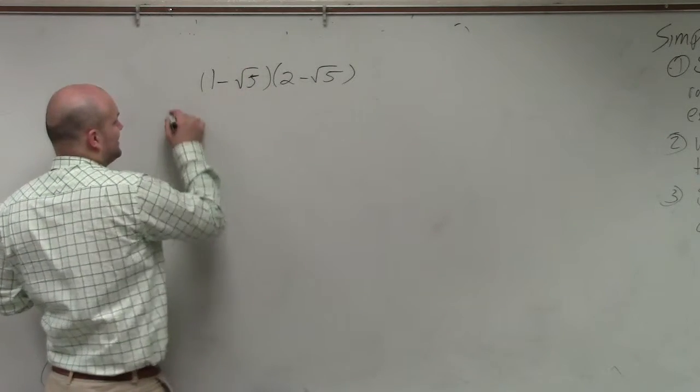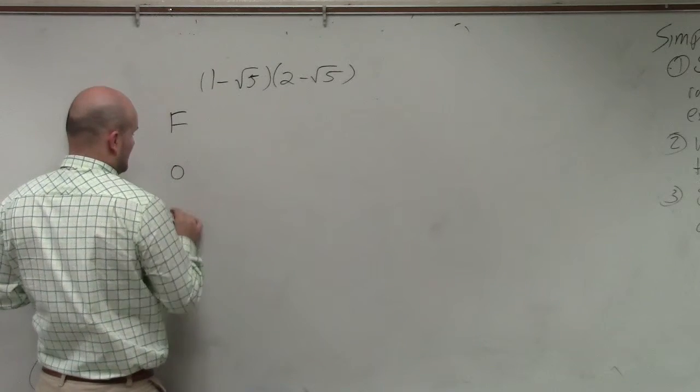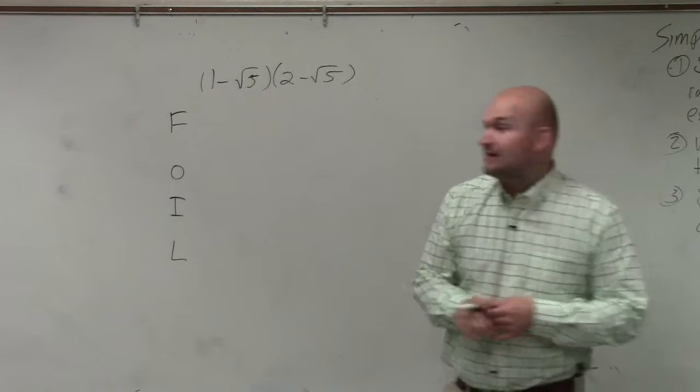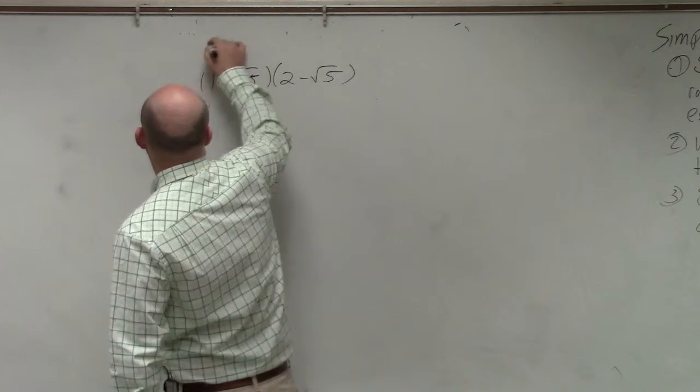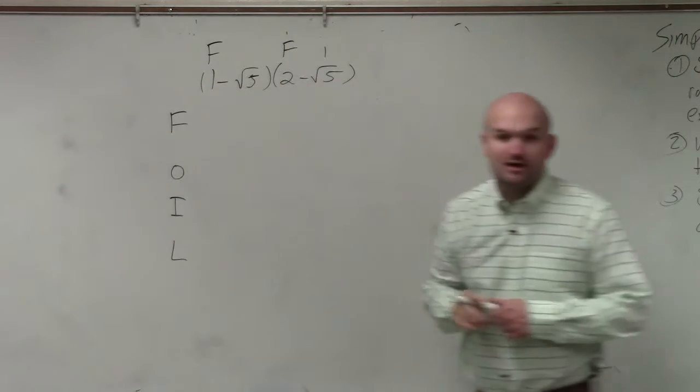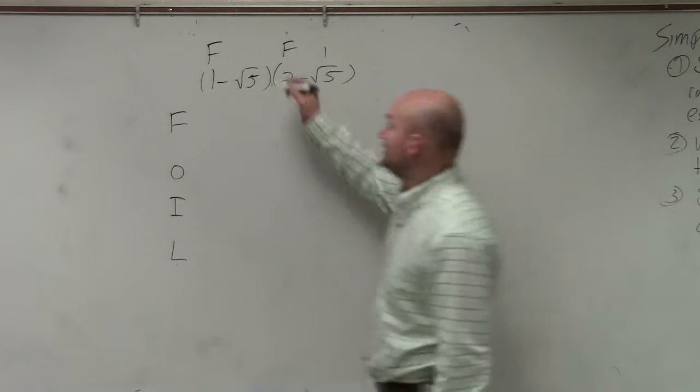So remember, the FOIL method is first, outer, inner, last. You've got to remember FOIL and which term each letter represents. First is going to be the first term in each binomial, and we're going to be multiplying these first terms.